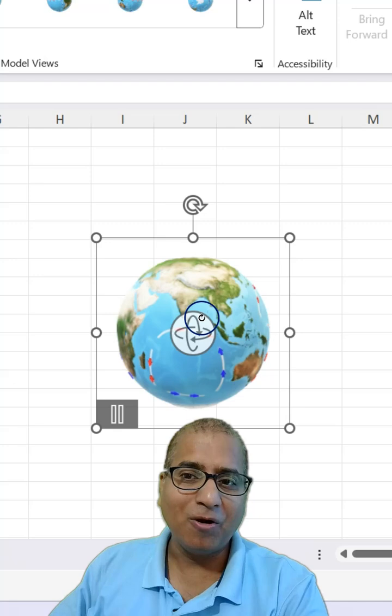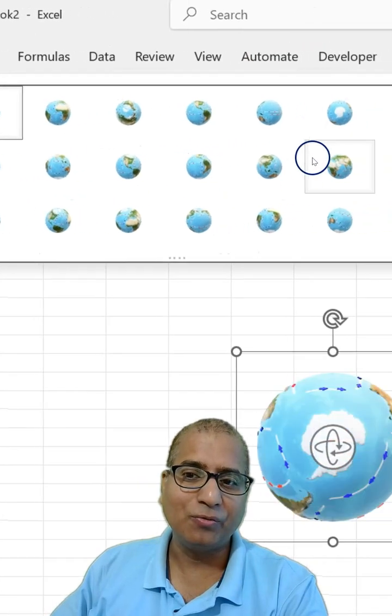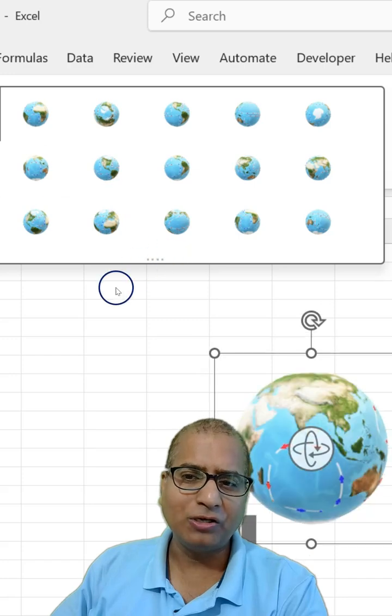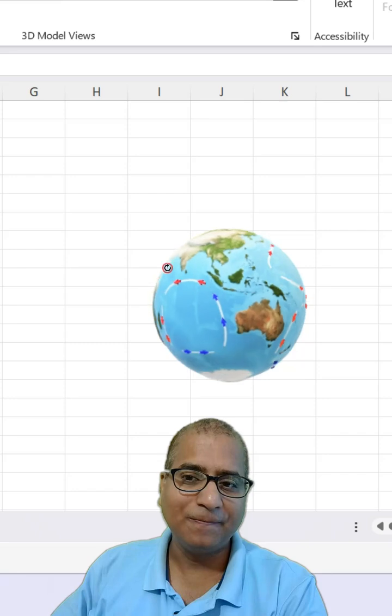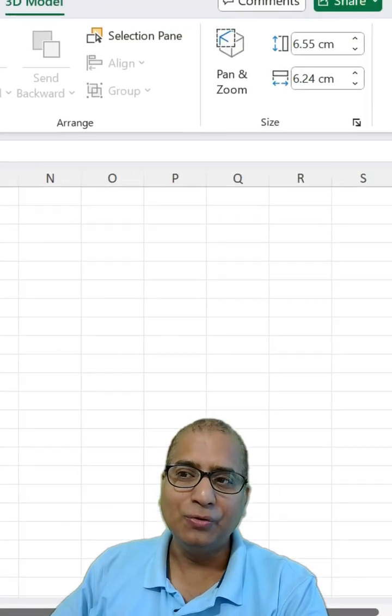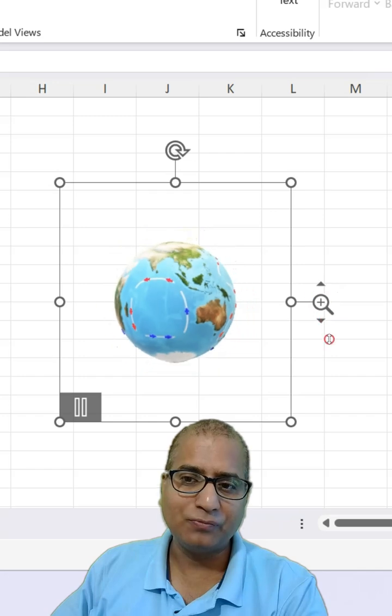The model is added and with the model you get a few more options. You see these options—you can move around, and not just only this, you can make use of mouse to move like this, as well as you can also zoom. Click here and you can also zoom in